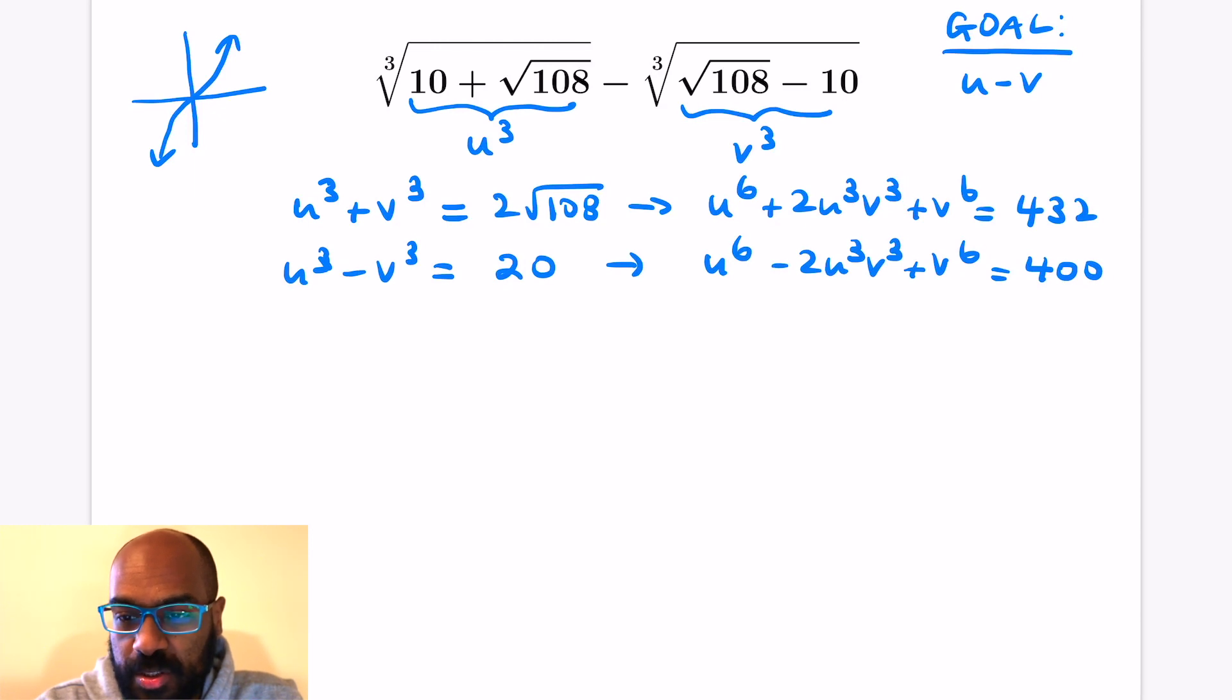We can use these then because we have a u to the sixth and a v to the sixth in both expressions. We can use these to figure out what u cubed v cubed is and then subsequently what uv is. If we subtract, we have 4 copies of u cubed v cubed has to be 32, so u cubed v cubed is 8.